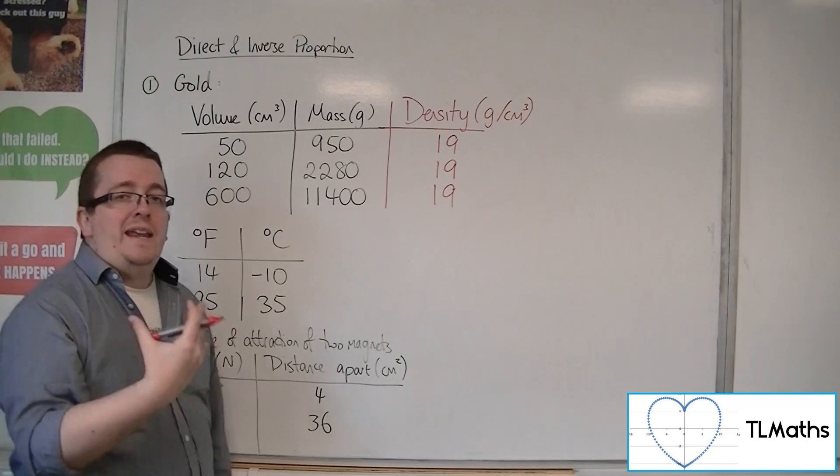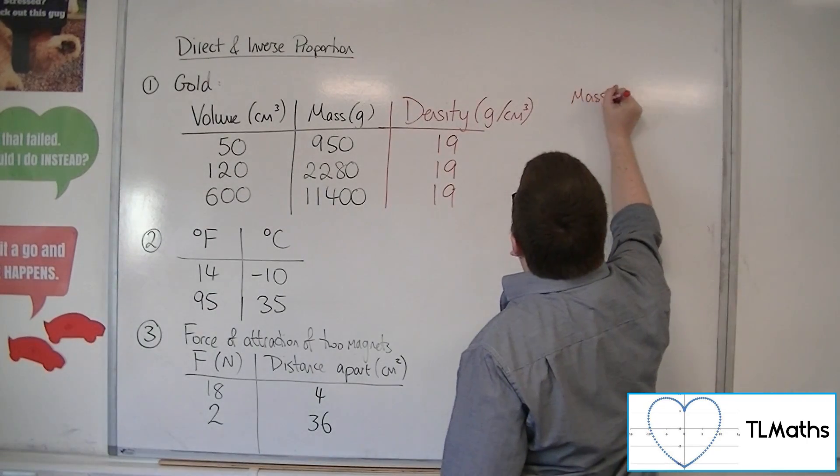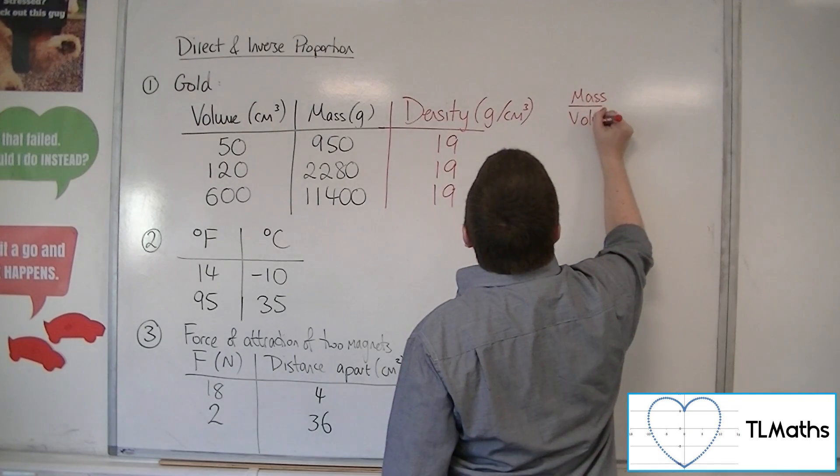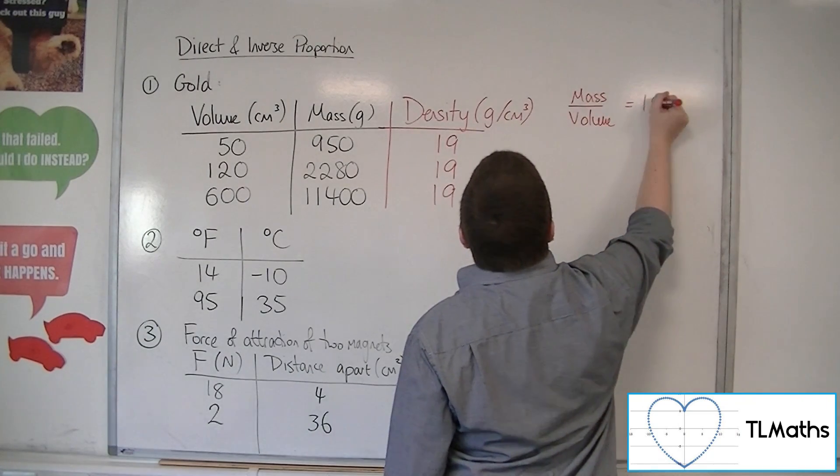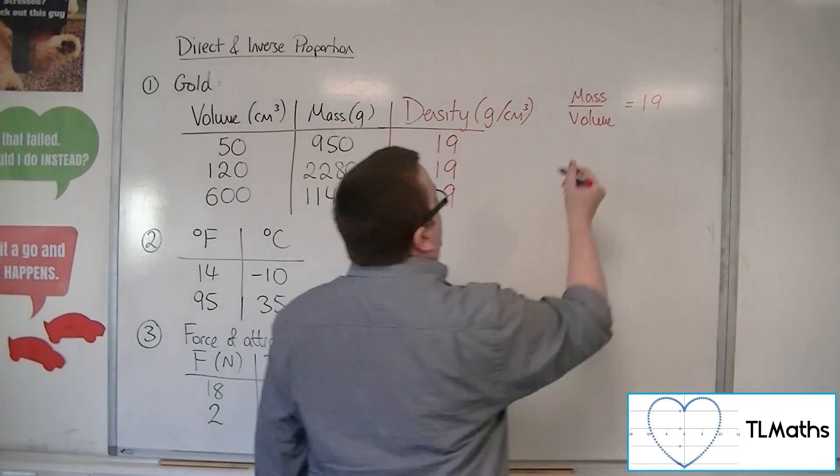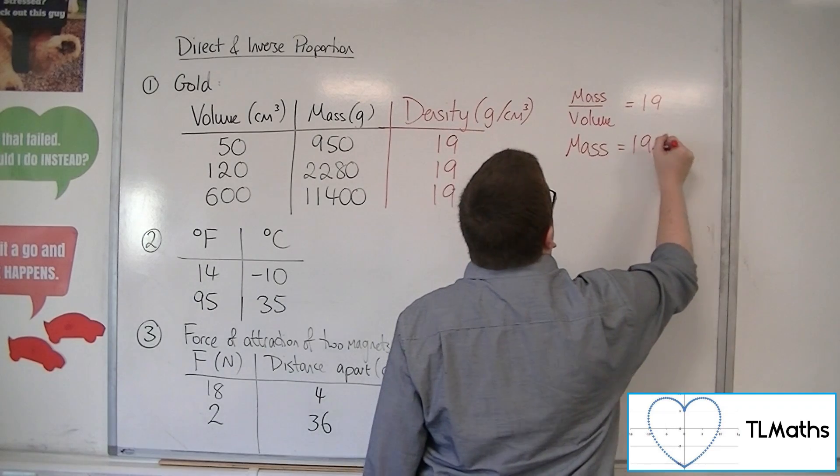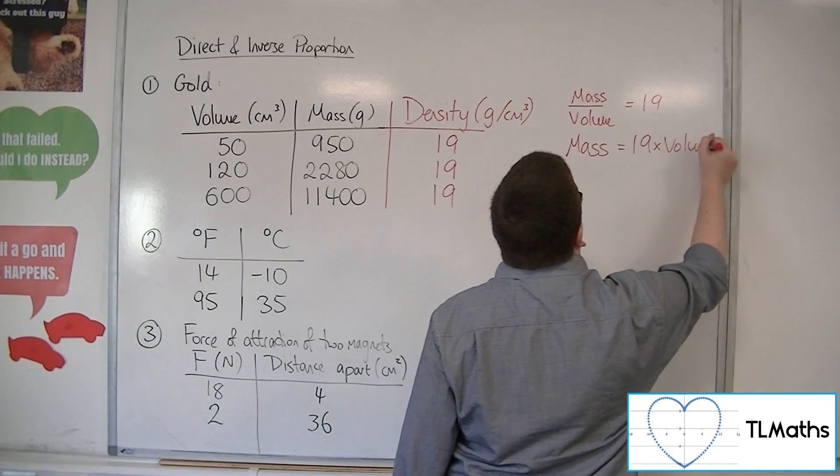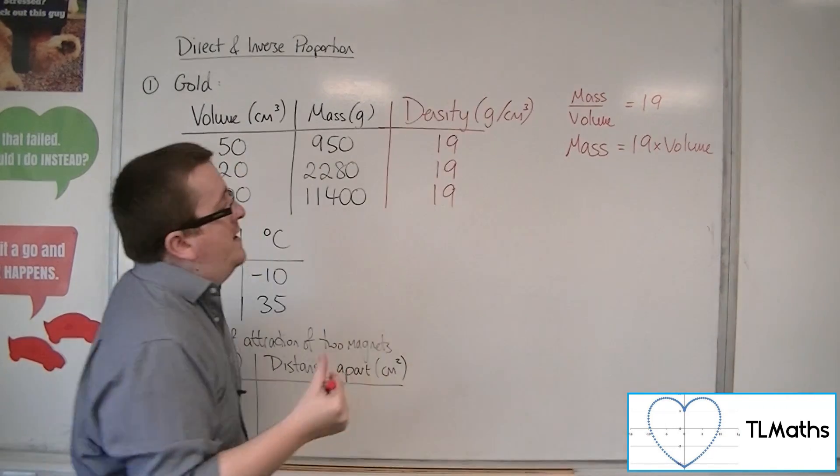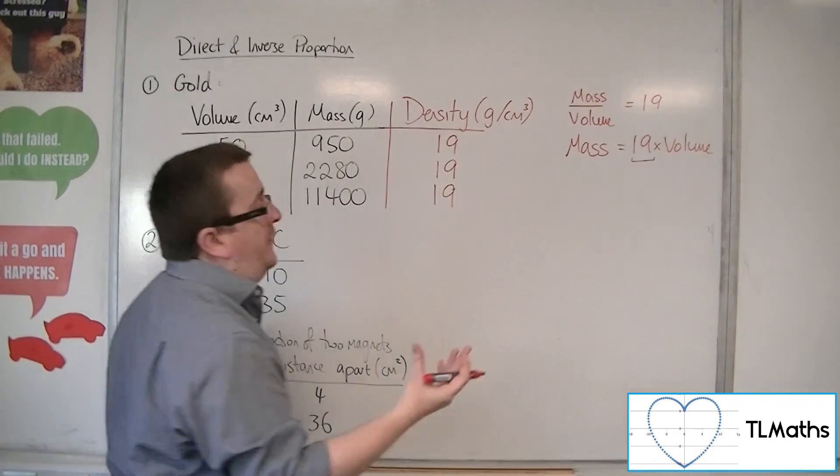So because you're getting a constant from dividing the mass by the volume, we're getting this constant of proportionality, we can say that the mass is equal to 19 times the volume. So that 19, what that represents is the density of gold.